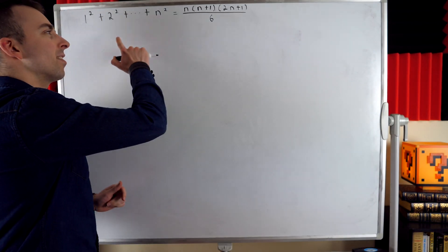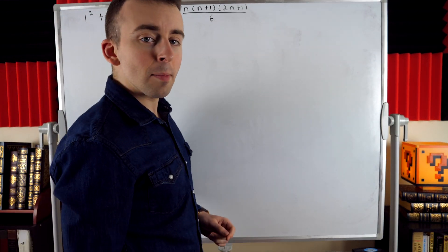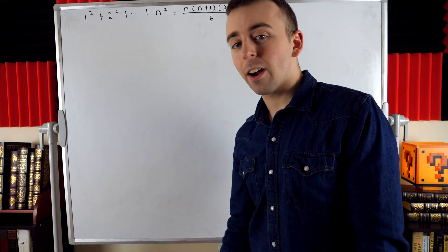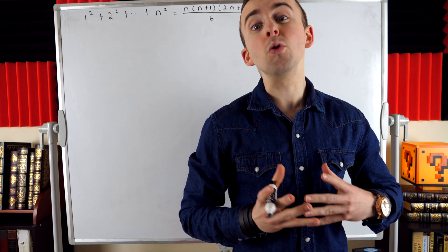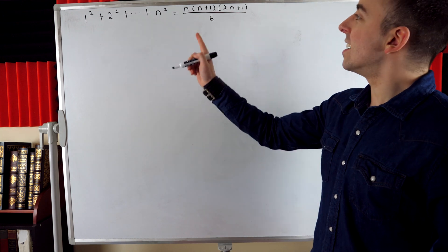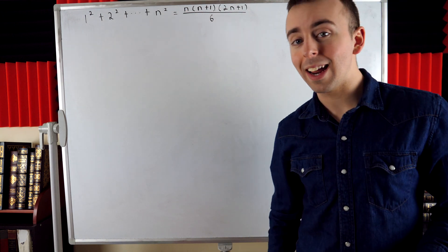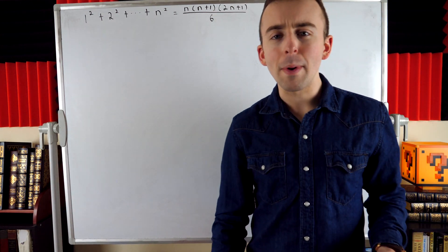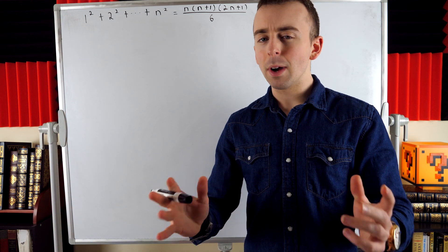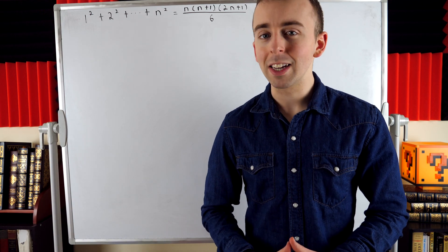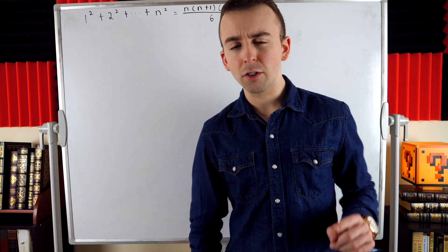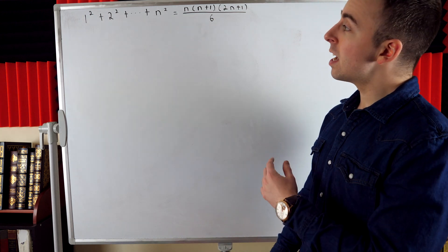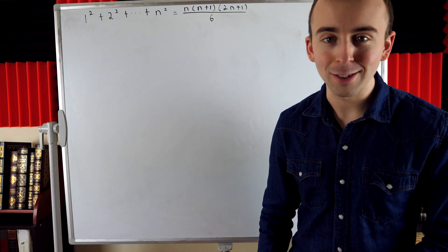Let's prove this nice little equation for the sum of the first n squares: 1 squared plus 2 squared all the way up to n squared equals n times n plus 1 times 2n plus 1, all over 6. It's not the most elegant equation in the world, but let's appreciate it by proving it. This is a pretty straightforward induction proof, so I recommend you try it yourself before watching, especially if you're trying to hone those induction skills.